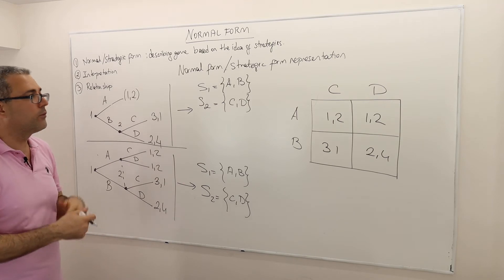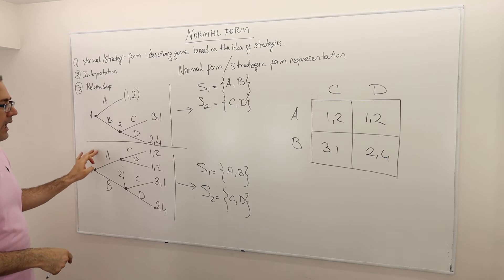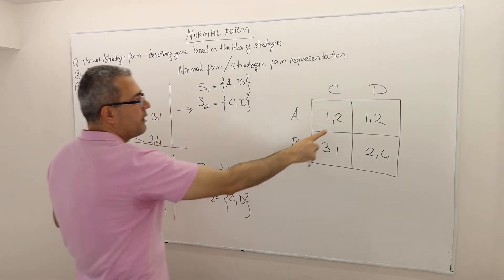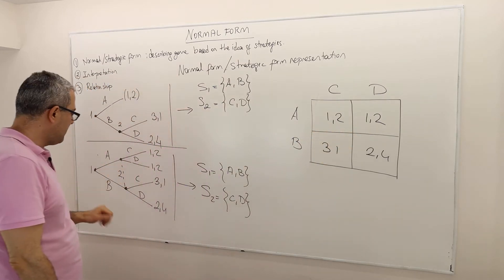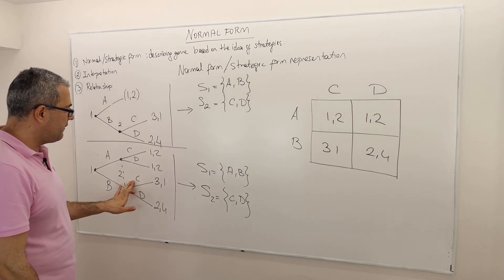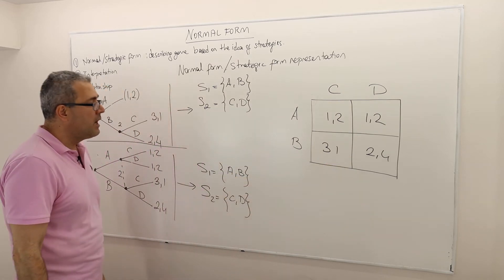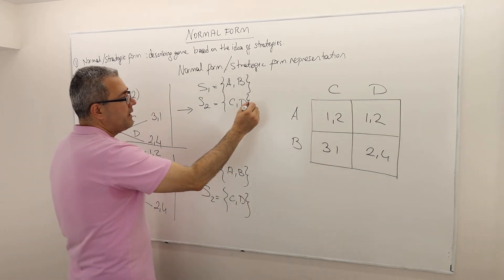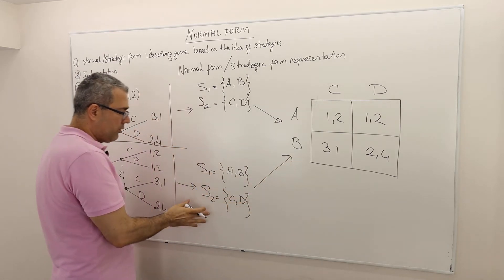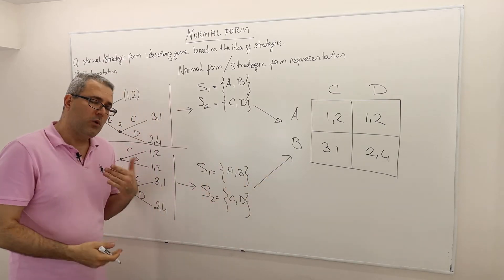Player two's strategies are C and D, very similar to the first game. In the matrix form: if player one plays A, the payoffs are (1/2, 1/2) regardless of whether player two plays C or D. If player one plays B and player two plays C, it's (1,1); if player two plays D, it's (2,4). So this game tree can also be represented by this normal form matrix.